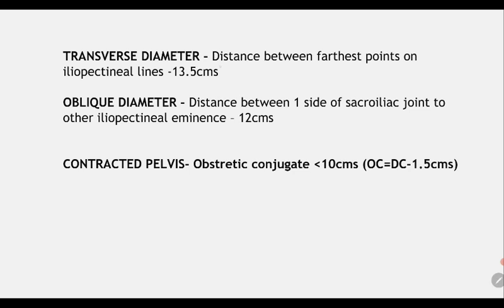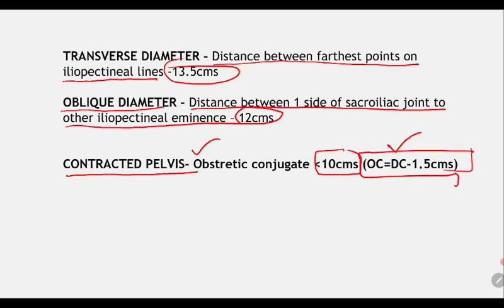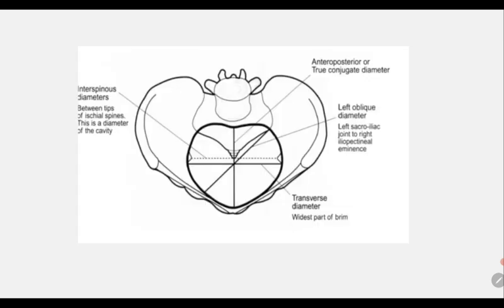The transverse diameter is the distance between the farthest points on the iliopectineal lines, measuring 13.5 cm. The oblique diameter is the distance from one sacroiliac joint to the opposite iliopectineal eminence, measuring 12 cm. A contracted pelvis is defined when the obstetric conjugate is less than 10 cm. The obstetric conjugate is calculated as the diagonal conjugate minus 1.5 cm.